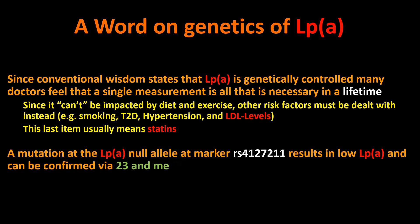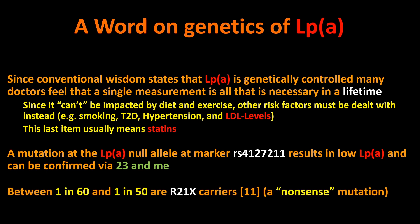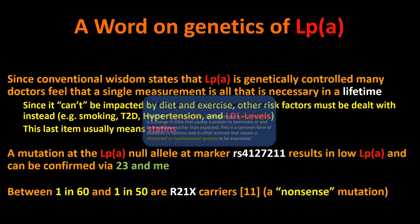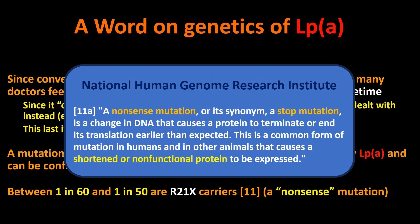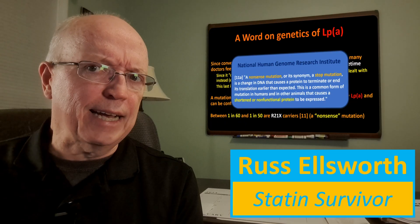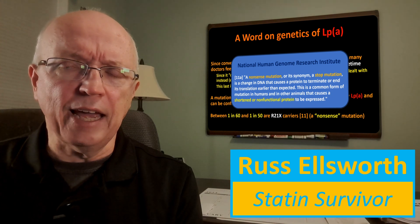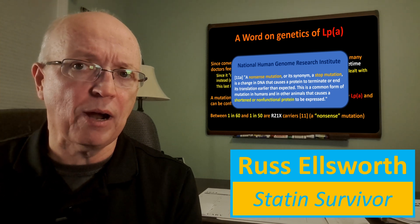There's a mutation at the LP little a no allele marker that results in low LP little a, and this can be confirmed by 23andMe commercially. I haven't done it yet, but I do have very low LP little a. There's also another genetic mutation carried by between 1 in 60 and 1 in 50 people, called R21X carriers — known as a nonsense mutation, or stop mutation. It causes a protein to terminate translation earlier than expected, resulting in a shortened or non-functional protein. If you're a carrier, you'd have little to no LP little a in your blood. That actually worries me a little because LP little a must have some positive function in human biology or it wouldn't have evolved.